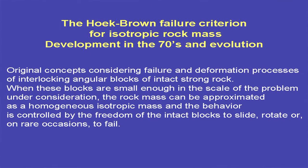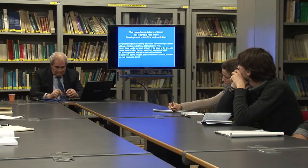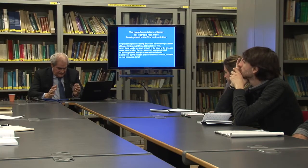The Hoek-Brown criterion was established for isotropic rock masses, introduced in the late 1970s and evaluated since then. When we proposed this with Brown, we expected something to supersede and develop it further, but it still stands. It means that it works.